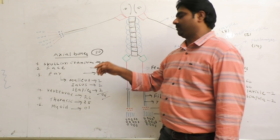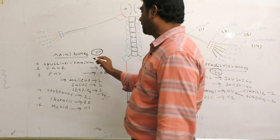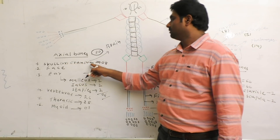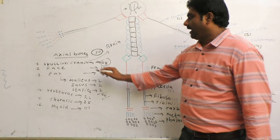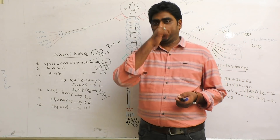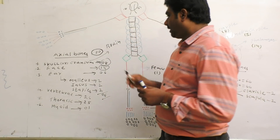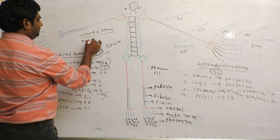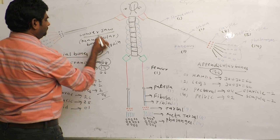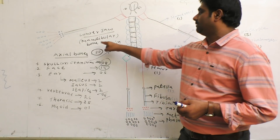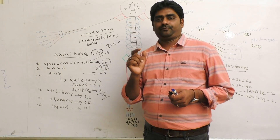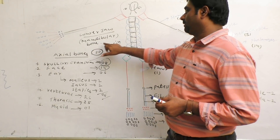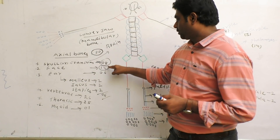Number 1 — Skull or Cranium. The human brain is protected by the skull or cranium. Total 8 bones are in the cranium. Face bones total 14. Out of 14 face bones, the lower jaw bone is the Mandibular bone, which is the hardest bone in our entire body. In our face, total 14 bones are there.